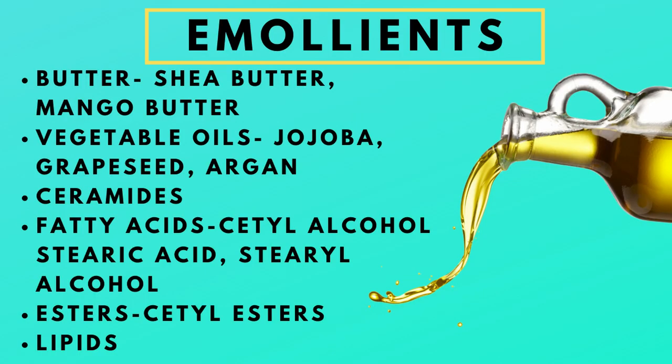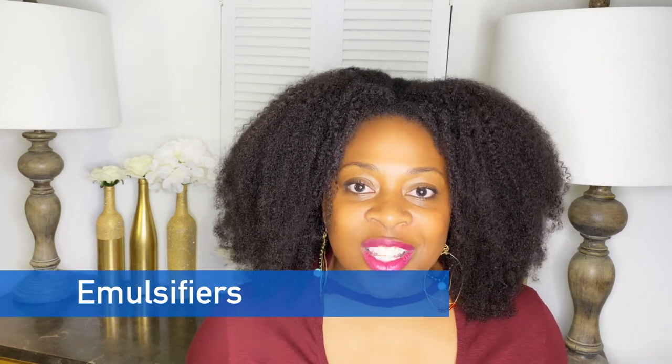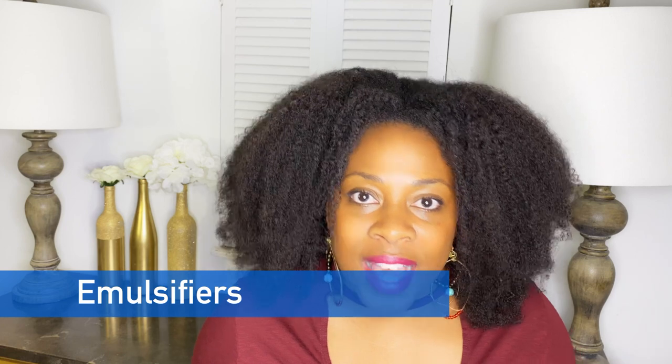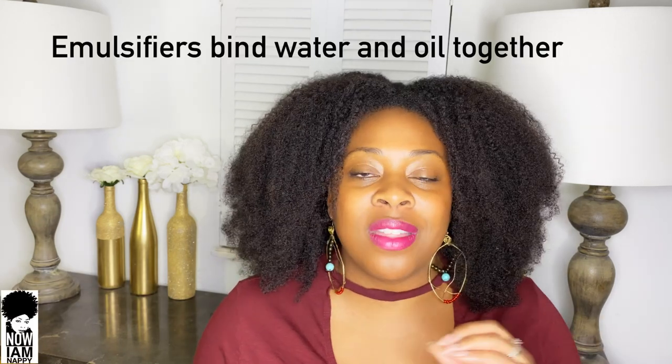Emollients have wonderful properties. You might see emollients in your products as standalone products classified under categories like butters, oils, esters, fatty acids and lipids — or you might see them in their common names such as jojoba oil, almond oil, olive oil, shea butter, cocoa butter, mango butter, and forms of ceramides and ceramide oils. The fatty acids you see in products are actually the emulsifying agents.